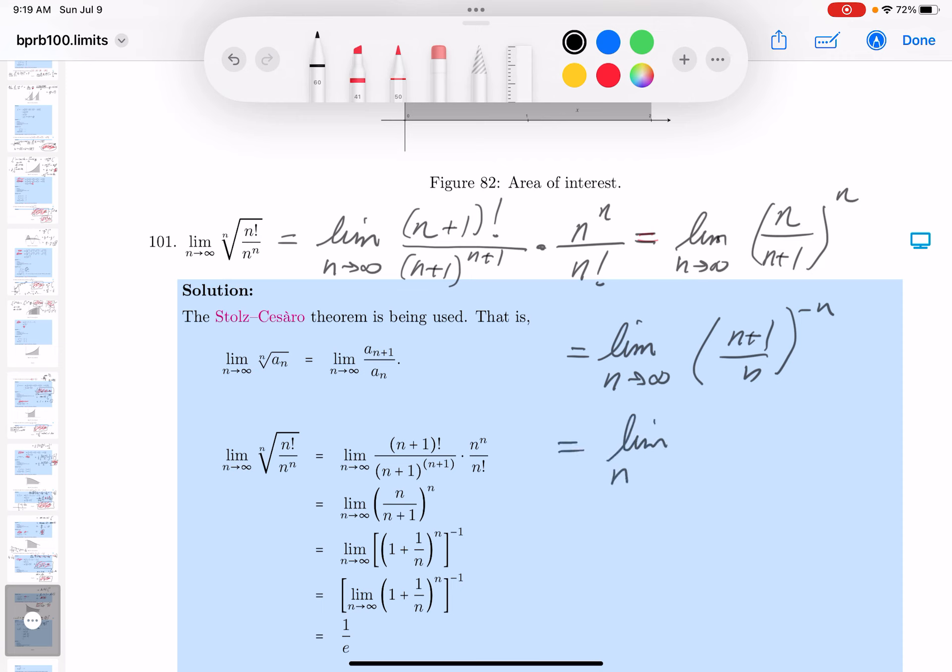Limit N goes to infinity. And what do you get there? You get 1 plus 1 over N. It's starting to be more familiar to me now. And that's going to be minus 1 times N.